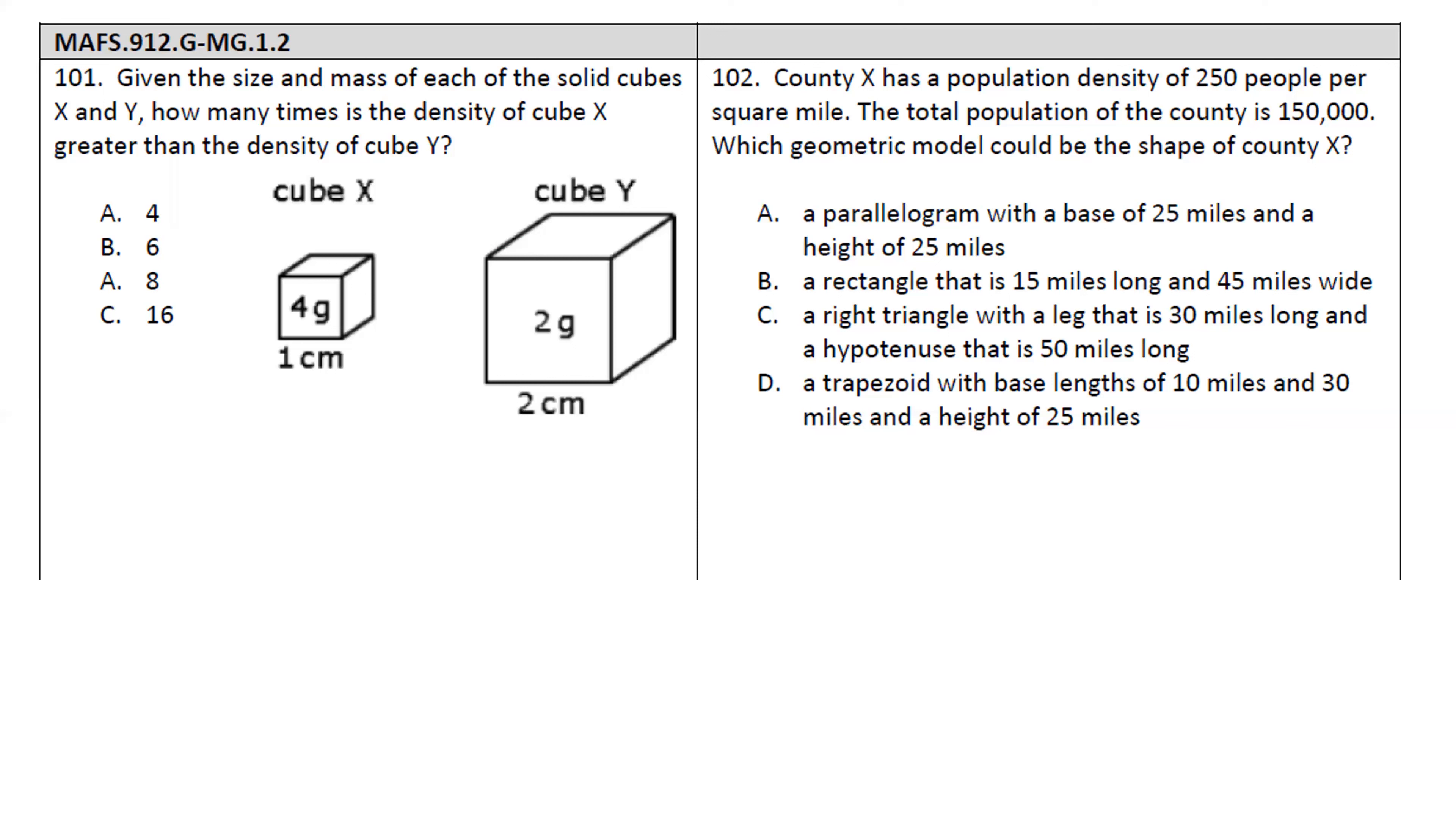101. Given the size and the mass of each of the cubes X and Y, how many times is the density of cube X greater than the density of cube Y? This one is bringing a little science into it. You guys remember your density from science? Mass over volume. So they gave us grams. They gave us one side of our cube. So we got to figure out the volume of our cube so we can divide to figure out our density. On the first one, the volume is just going to be, since it's a cube, we could just do 1 cubed, which is 1. For this one, 2 cubed, which is 8.